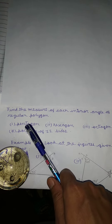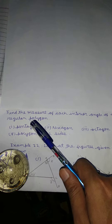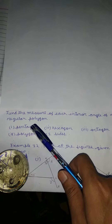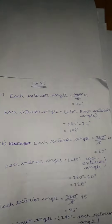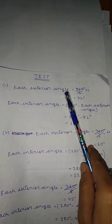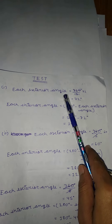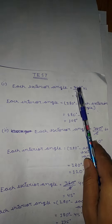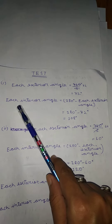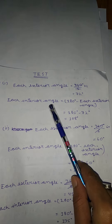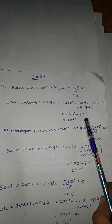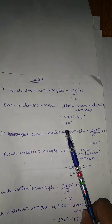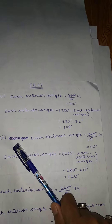First, we do the pentagon. A pentagon has 5 sides, so the exterior angle of a pentagon can be found by dividing 360 by 5, which gives 72 degrees. Each interior angle is then equal to 180 minus the exterior angle: 180 minus 72 equals 108 degrees.